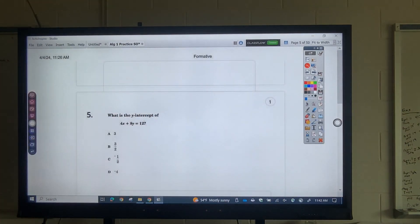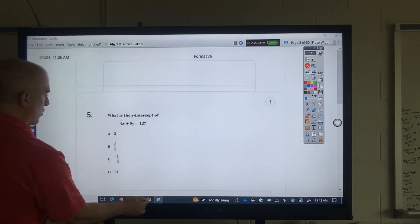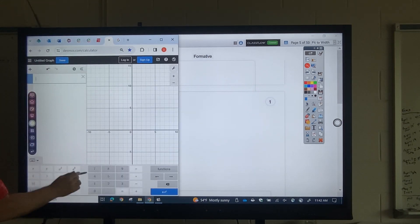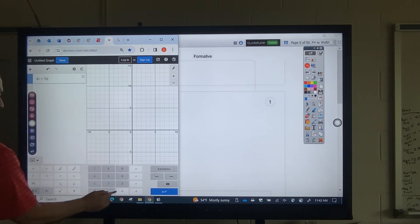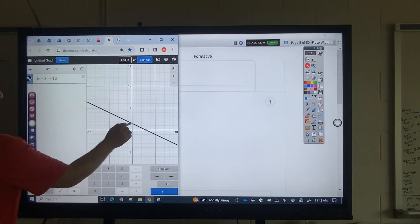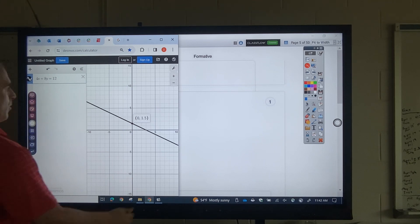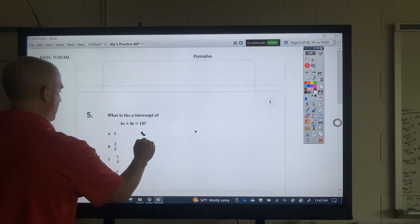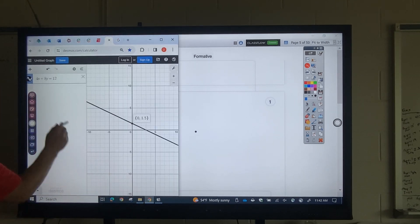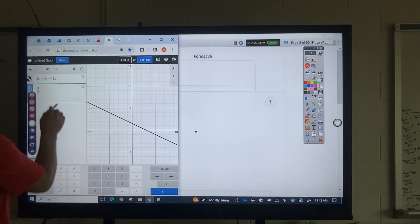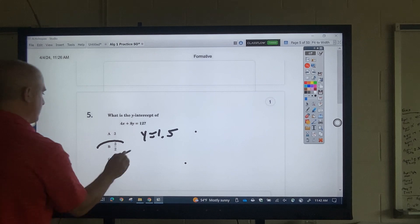Okay, what is the y-intercept? What I want to do is I want to graph that in Desmos. 4x plus 8y equals 12. Okay, the y-intercept is 1.5. Okay, if you ever had confusion of which fraction, just do 3 divided by 2. See if that one is. That's 1.5. Okay, so that's my answer.